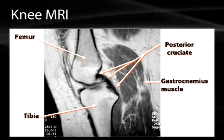Here's another knee MRI showing the great grayscale of the muscle fibers, especially the gastrocnemius. You can see the posterior cruciate ligament coming off the femoral condyle down to the posterior aspect of the tibia — notice how it appears as a lucent structure on this MRI.